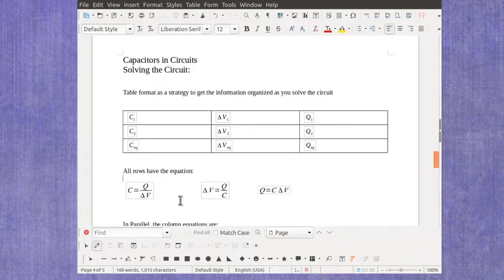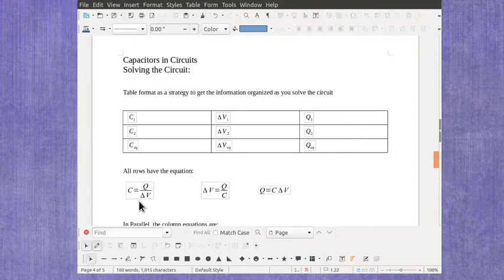Each one of the rows are defined by our capacitance equation, which can be rearranged to solve for the voltage or to solve for the charge on each capacitor.